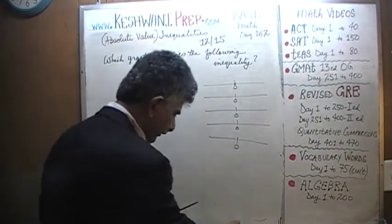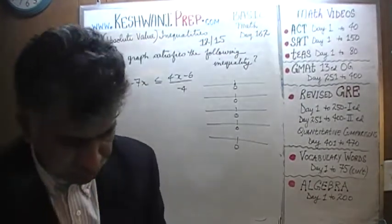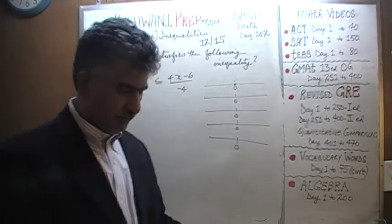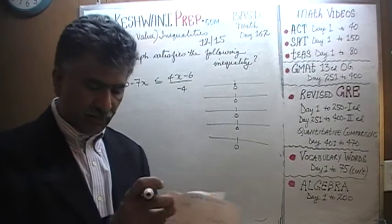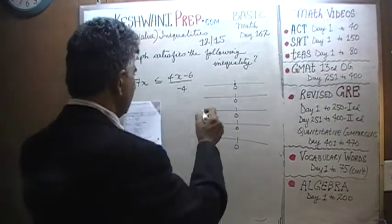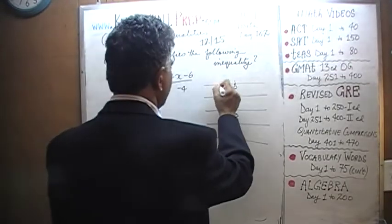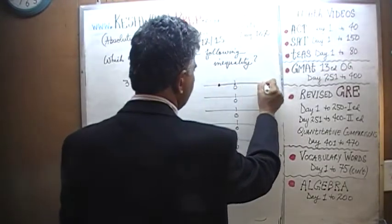The five answer choices that they give us are very generic. They don't have a lot of numbers on them. The first one starts with some positive number and goes to the right.